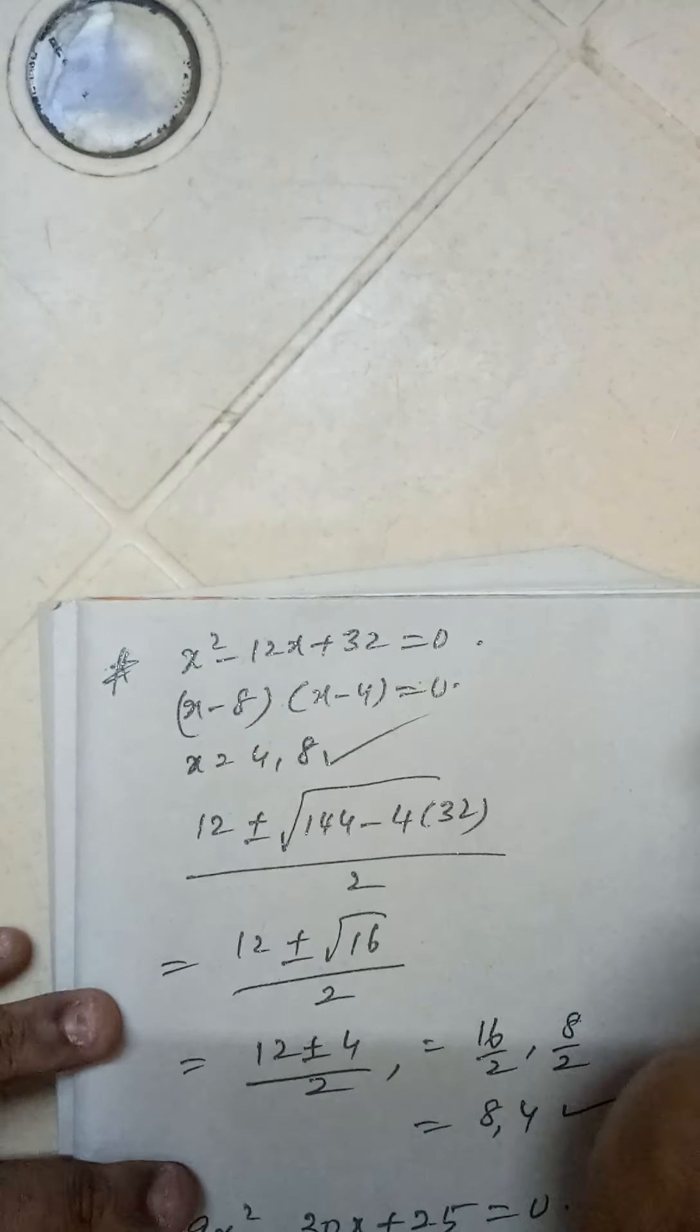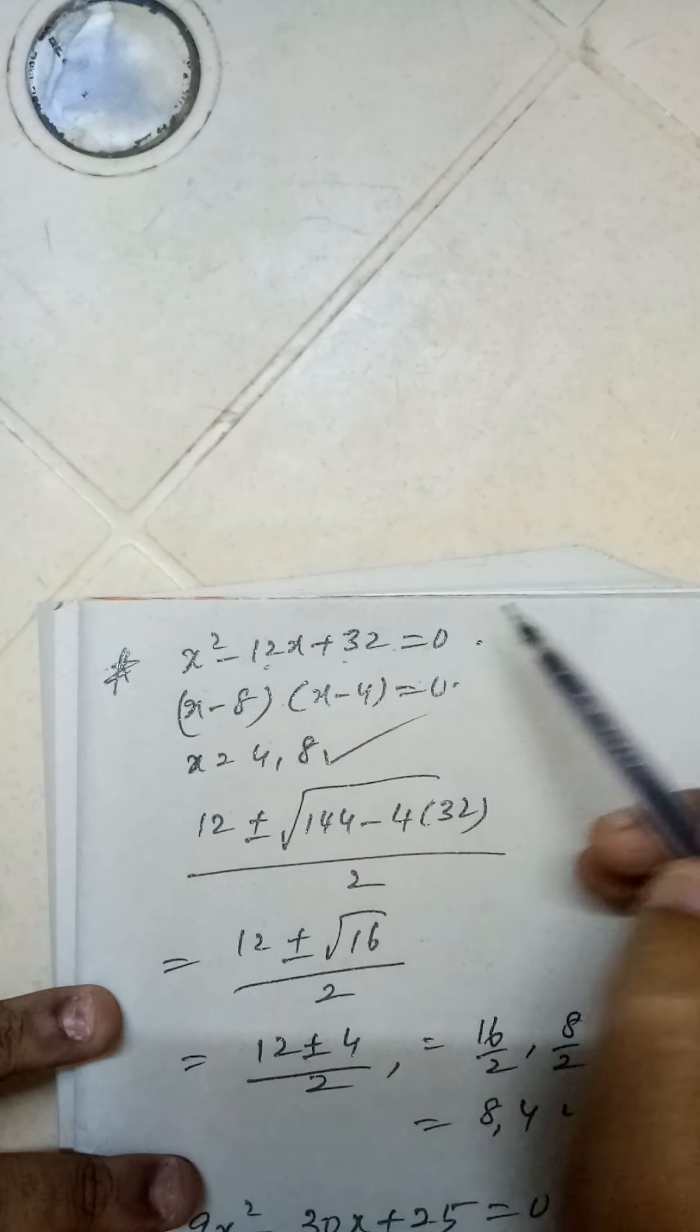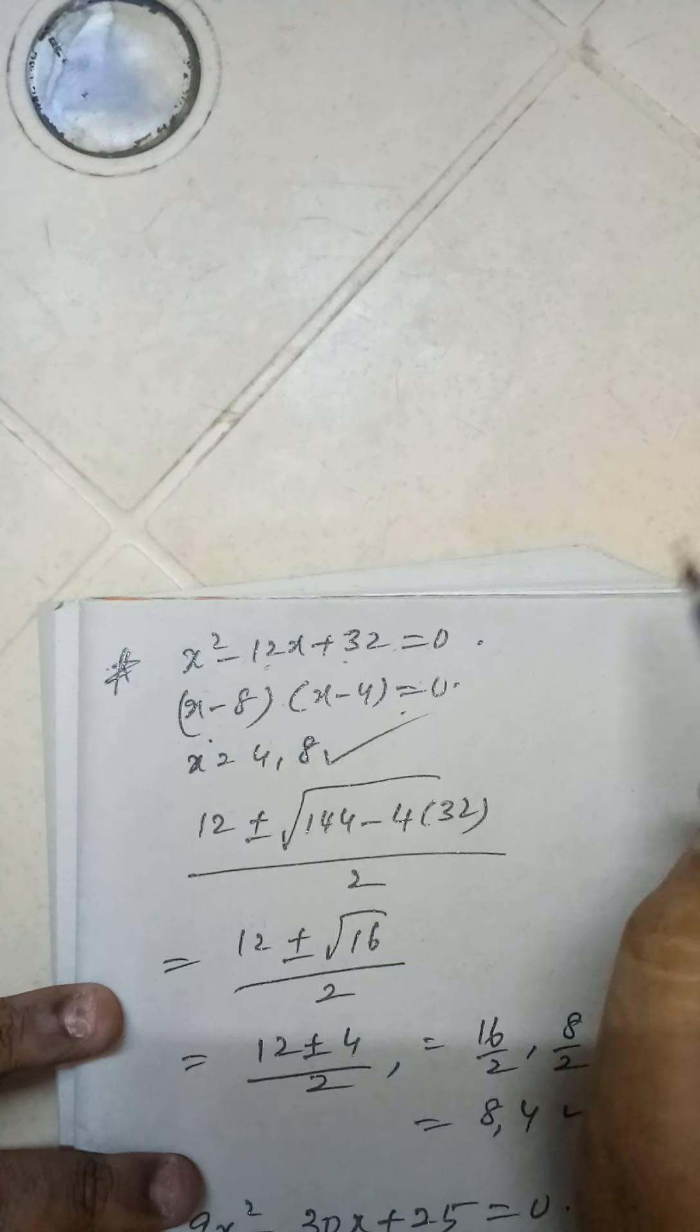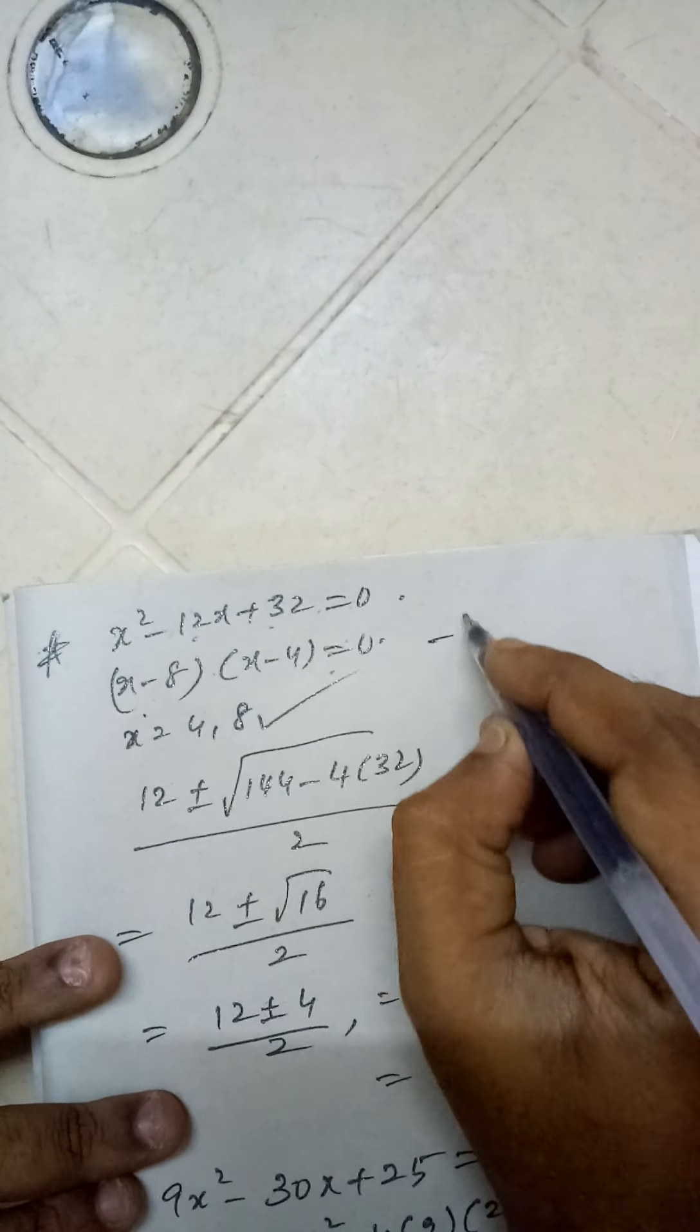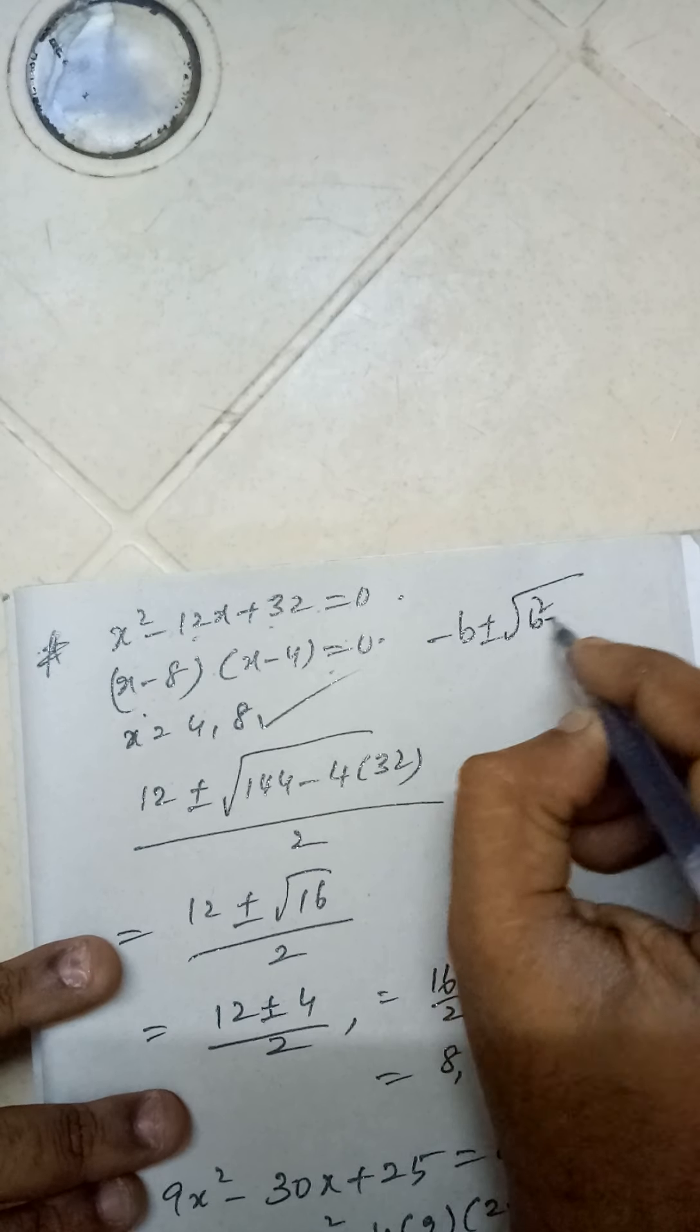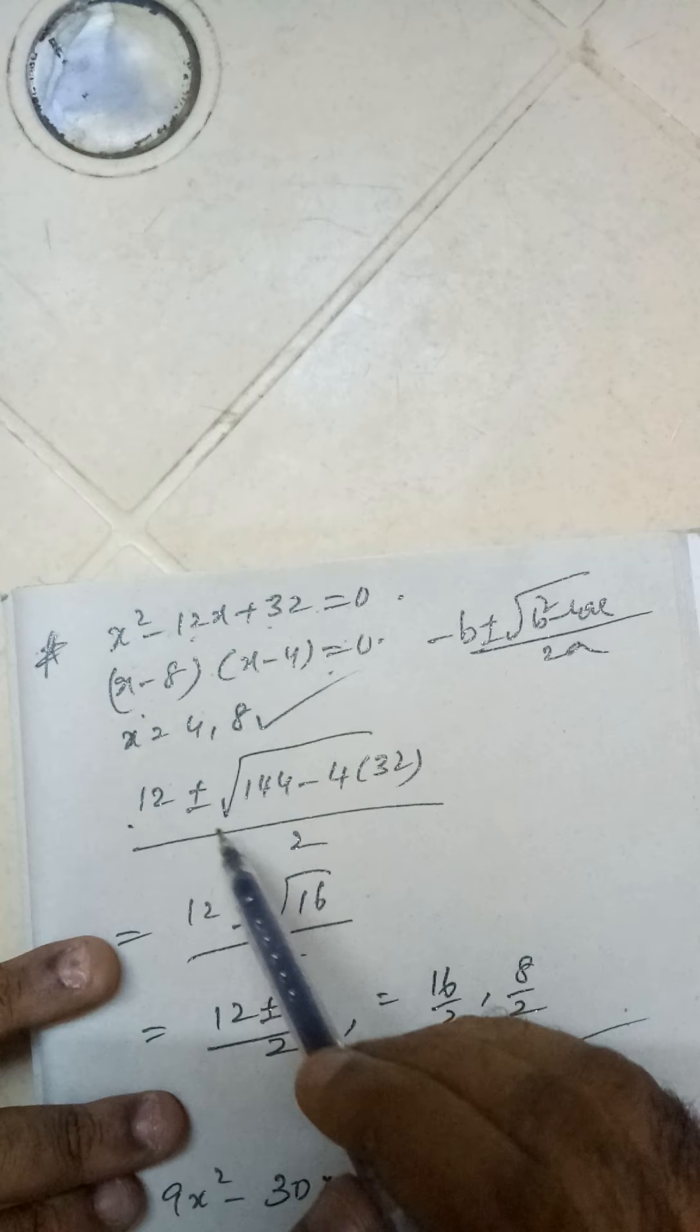We can see another example: x² - 12x + 32 = 0. If you factorize, you get (x - 8)(x - 4) = 0. So this is one method. Another method is using this formula which we have discussed earlier - this is the formula approach.